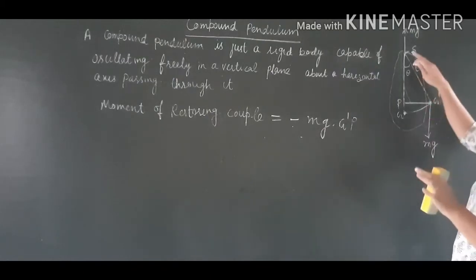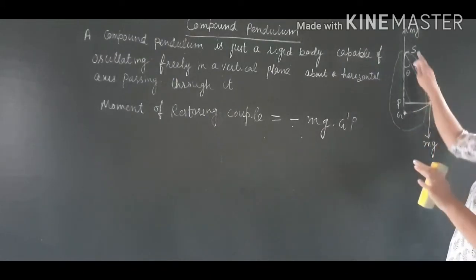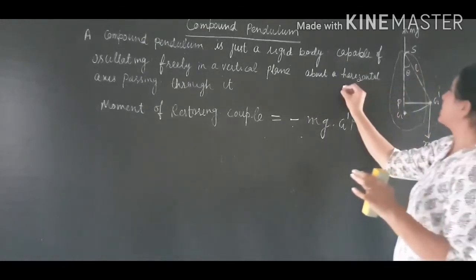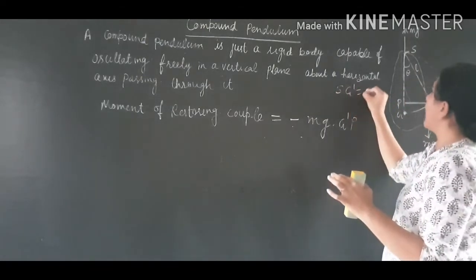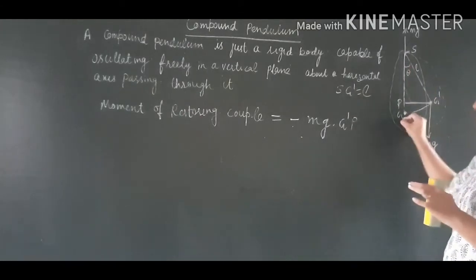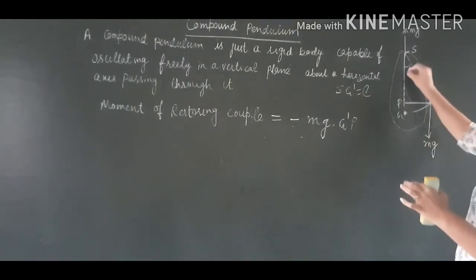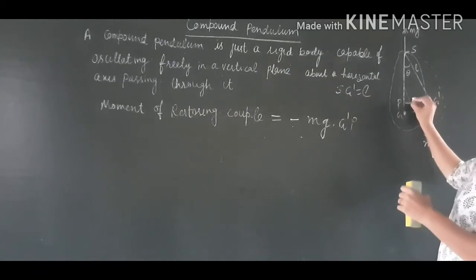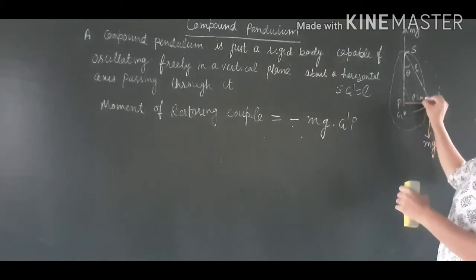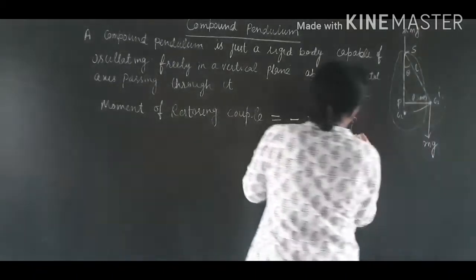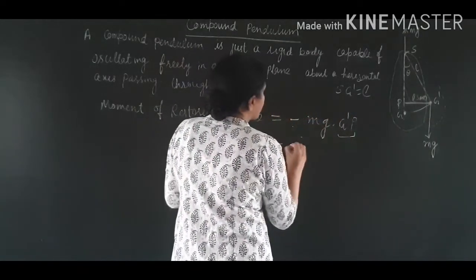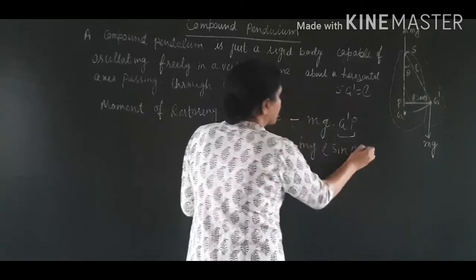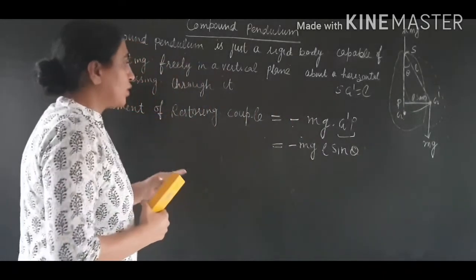The length of the pendulum is l, meaning SG equals l and SG dash also equals l. Since the angle is θ and the length is l, the perpendicular distance G dash P equals l·sinθ. So the moment of the restoring couple equals −mg·l·sinθ.